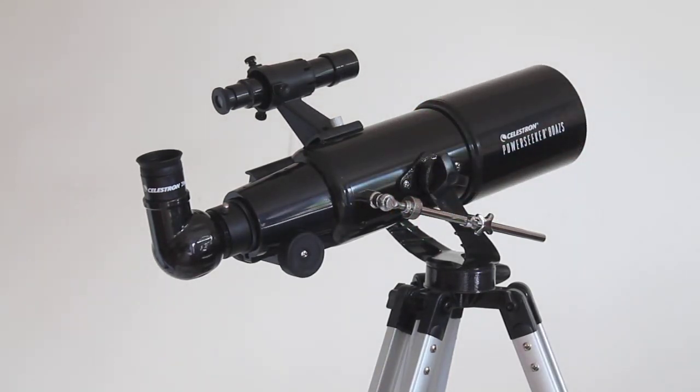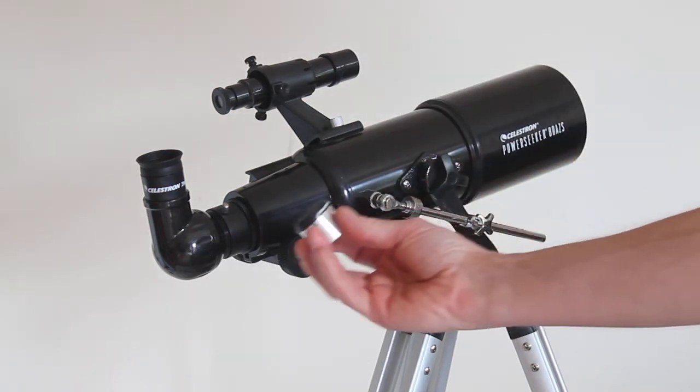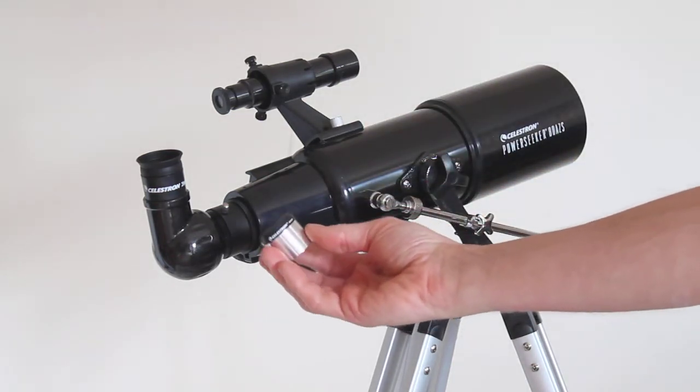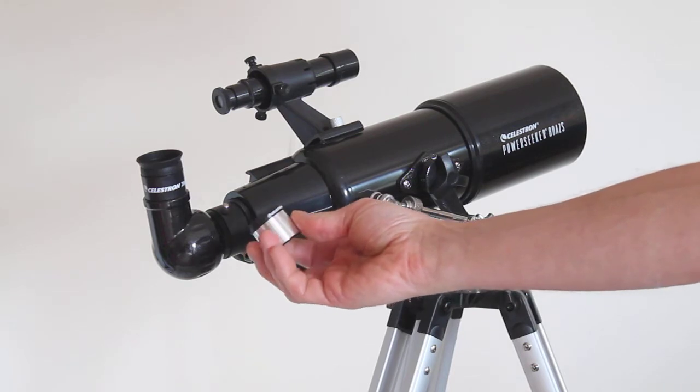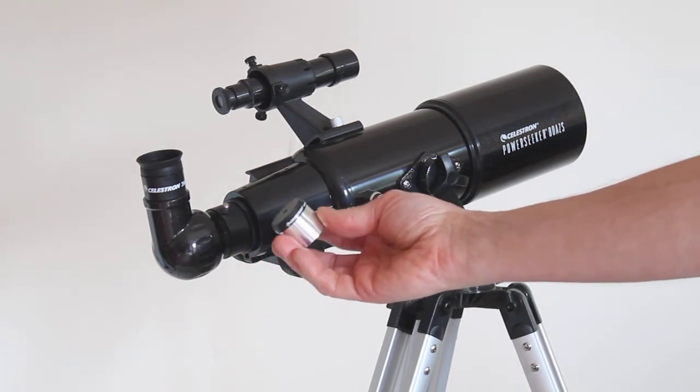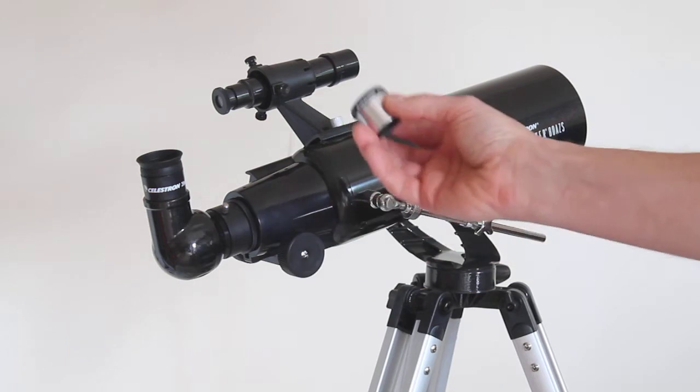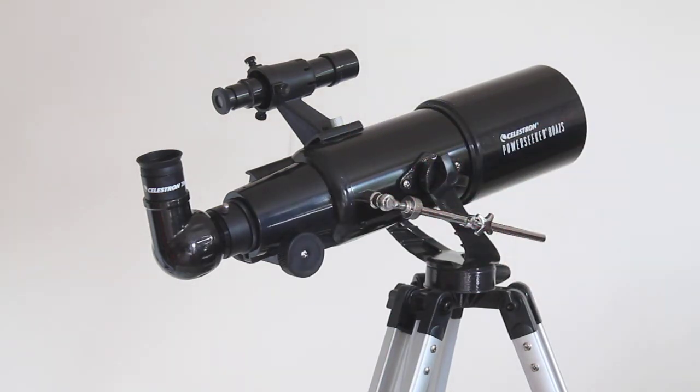The eyepieces you get with this telescope: you get the 20x magnification one, 20mm. You also get this 4mm that will give 100x magnification if you want to look at the moon in a bit more closer detail. It's not a high quality eyepiece, so you might want to upgrade that at some point to a PLOSL.